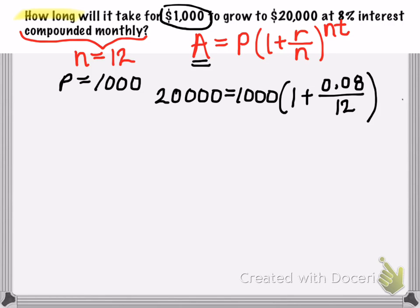And then it's raised to the n times t power. So that would be 12 times t. And there's our unknown, our unknown is t.